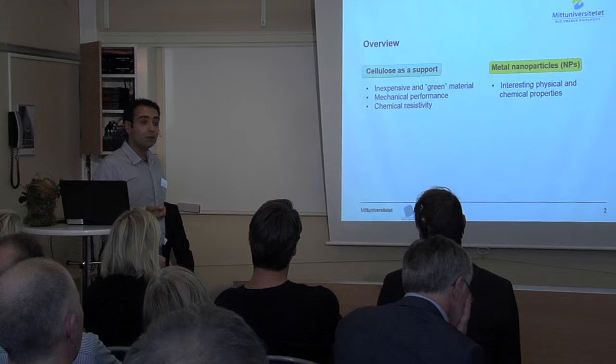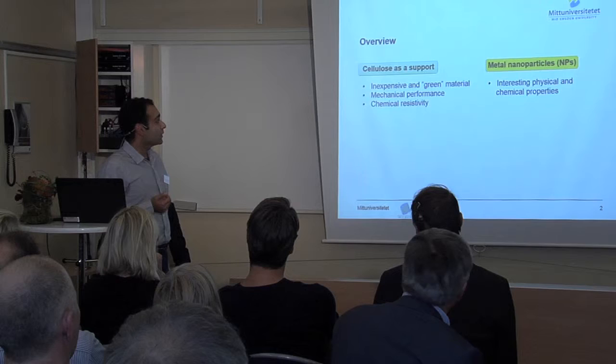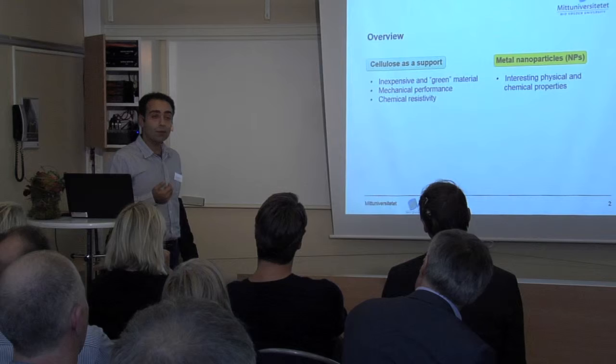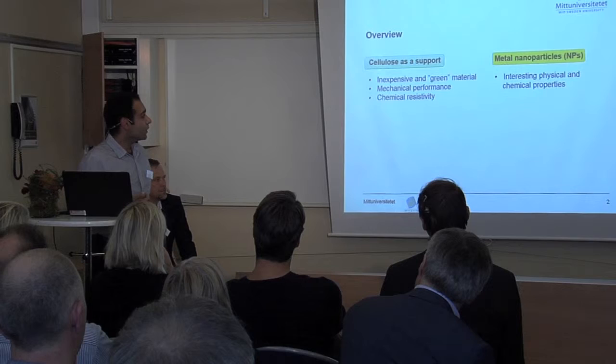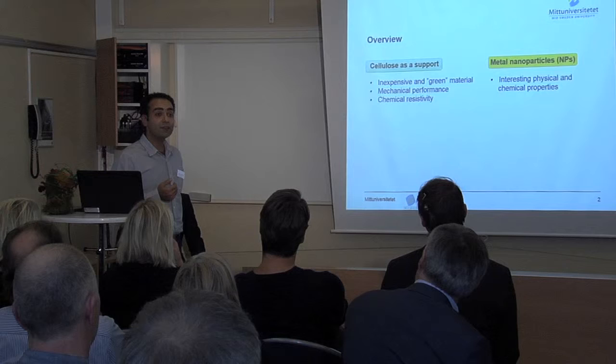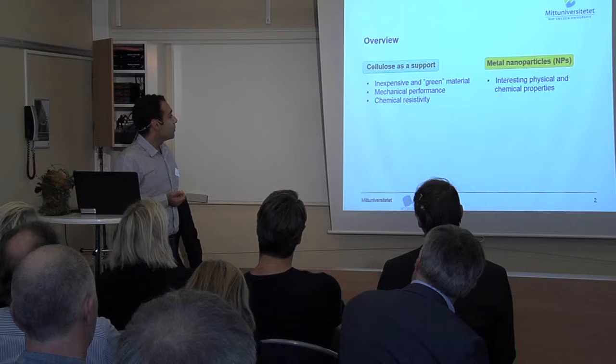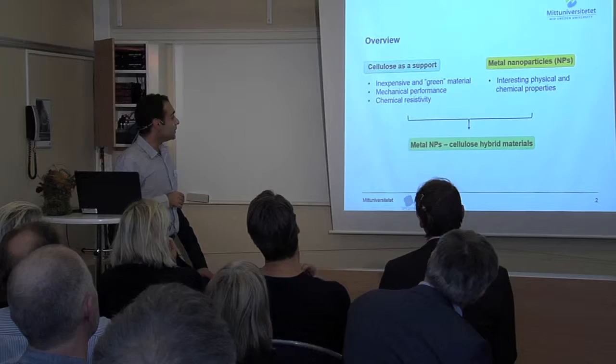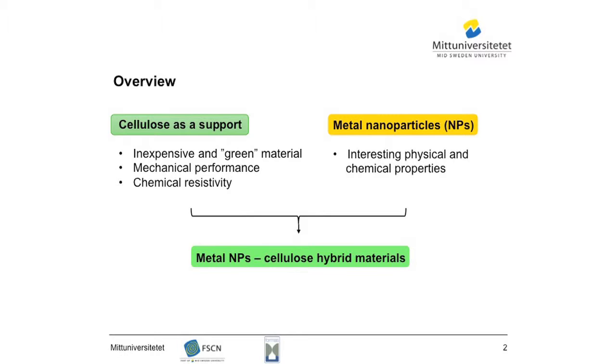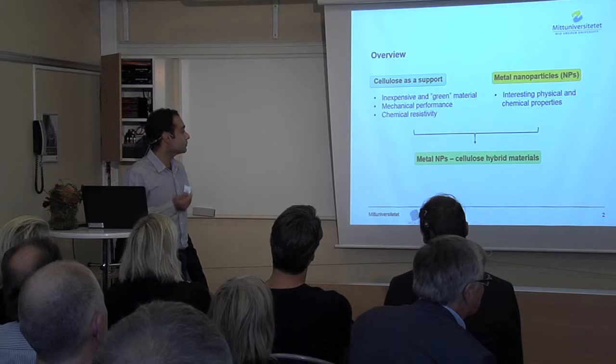On the other hand, metal particles in the nanometer size range often show interesting physical and chemical properties which sometimes differ from their bulk properties. To be usable, recyclable, and cost-effective, metal nanoparticles often need to be incorporated in a support material, which in our case is cellulose. By incorporating metal nanoparticles in a cellulose matrix, hybrid materials with unique catalytic, magnetic, biomedical, and electronic properties can be produced and used in different applications.